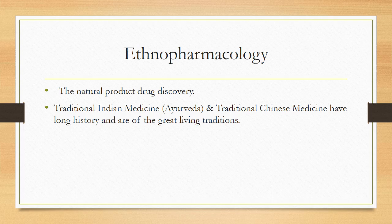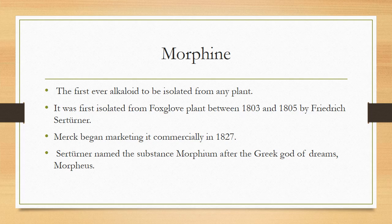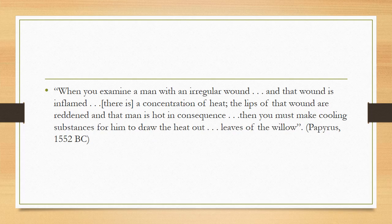Ethnopharmacology revolves around the natural product of drug discovery. Traditional Indian medicine and traditional Chinese medicine have long histories and are great living traditions. Morphine is the first-ever alkaloid to be isolated from any plant, first isolated between 1803 and 1805 by Friedrich Sertürner. Merck began marketing it commercially in 1827. Sertürner named the substance morphine after the Greek god of dreams, Morpheus.